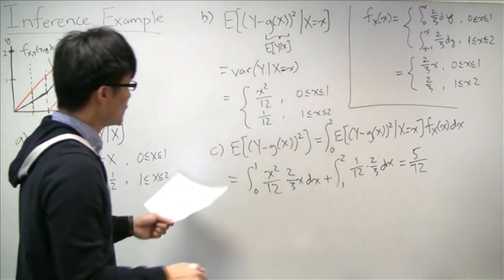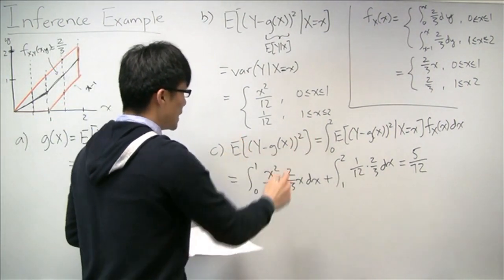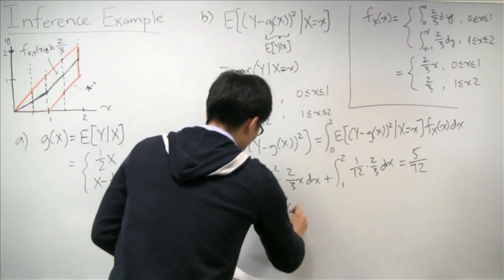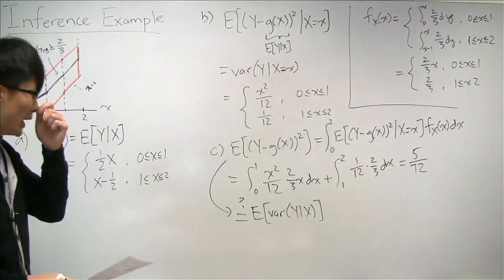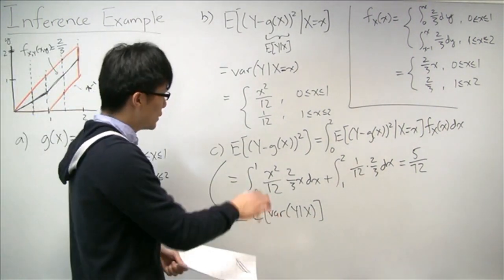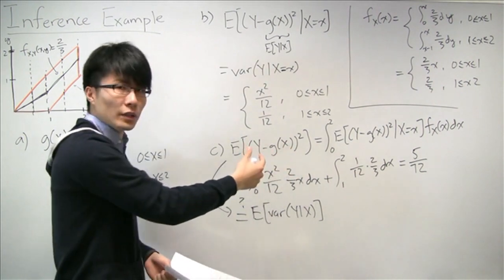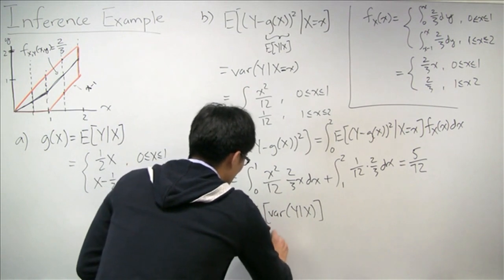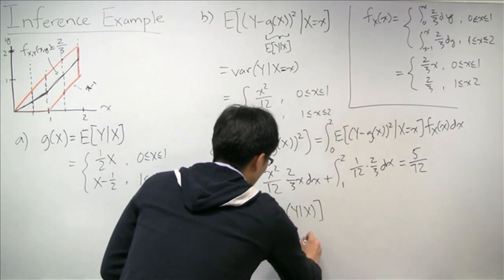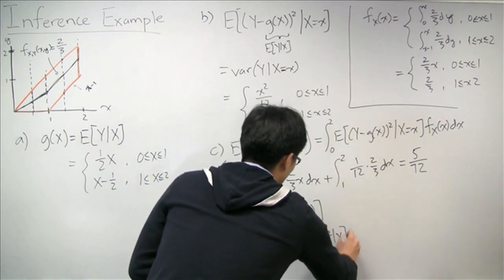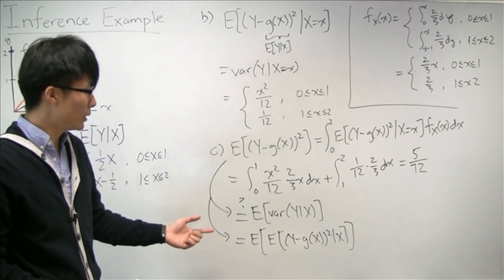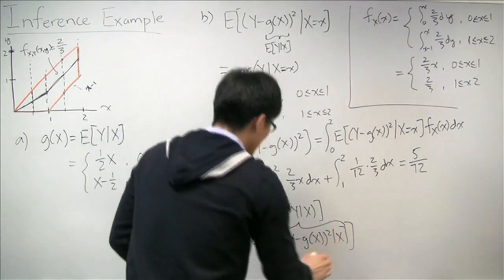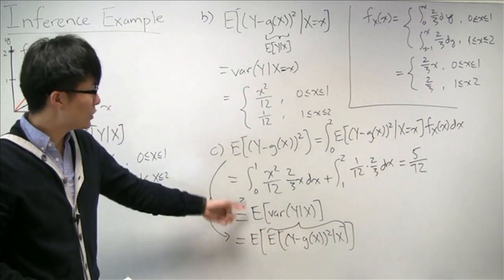The last part of this question asks whether this MSE equals the expectation of the conditional variance. It turns out that yes, it does. We can see that by applying the law of iterated expectations: the MSE equals E[E[(Y − g(X))² | X]], and the inner expectation is exactly the conditional variance of Y given X. So these two are, in fact, the same.